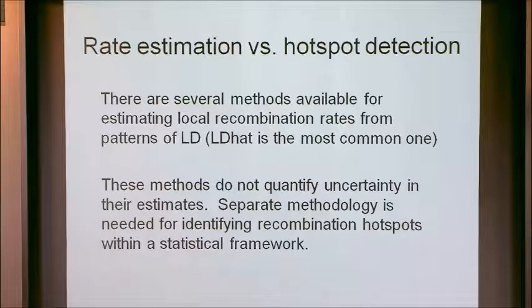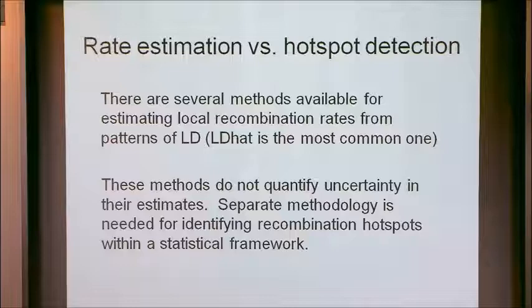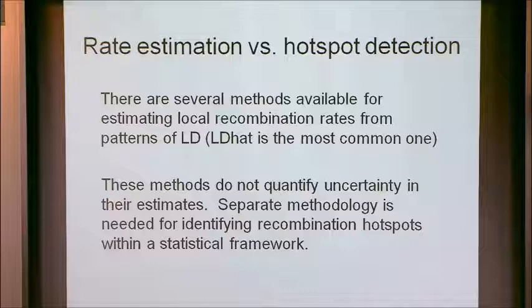There are one set of methods for estimating recombination rates across large regions — Gil was a pioneer in this, and Yun has done some work too. But those methods in general do not quantify the uncertainty in their estimates. So if your interest is in identifying those specific regions where recombination rates are high — what we call recombination hotspots — you need a separate methodology for identifying them in some kind of statistical or quantitative framework.